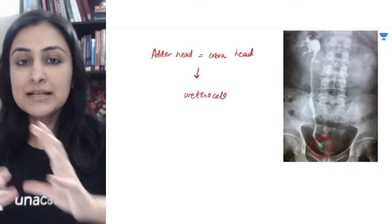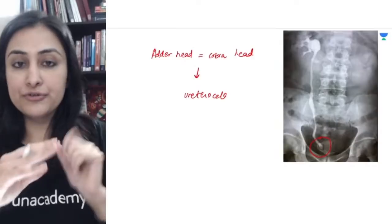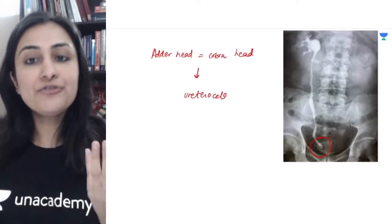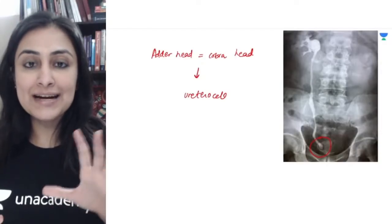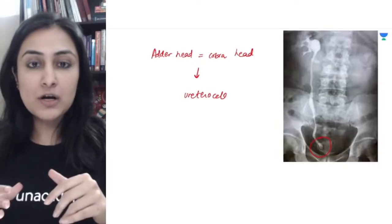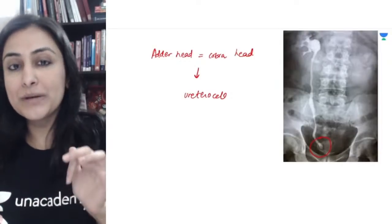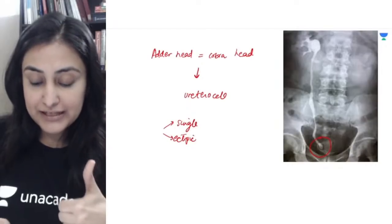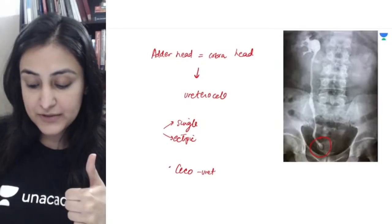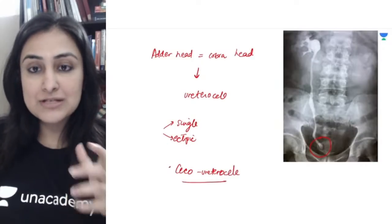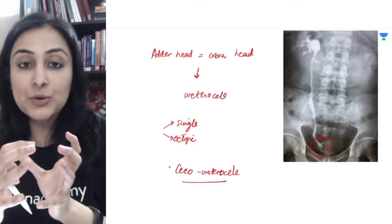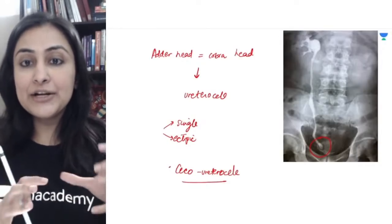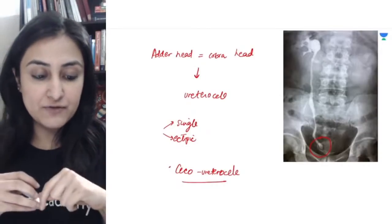Adder head or cobra head appearance represents ureterocele. There are mainly two types: one is a simple ureterocele in the orthotopic location where you have a cystic dilatation, and the other is an ectopic ureterocele which is usually associated with a duplex moiety. A rarer variant is cecoureterocele, where the entire cystic dilatation prolapses further down into the bladder neck and into the urethra.